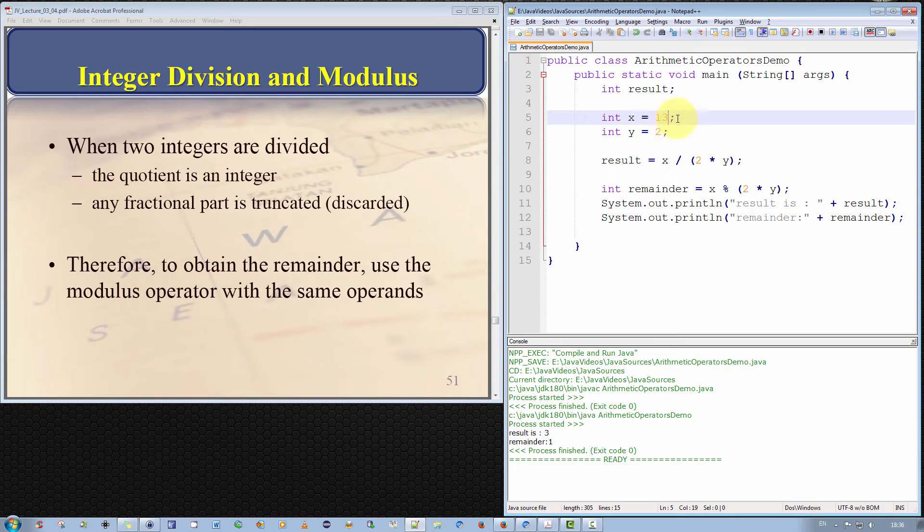And just one more example. We'll try 16 and we'll try 3 this time. Just to show this. So what should happen? Well 3 multiplied by 2 is 6. 3 multiplied by 2 is 6. 6 into 16 goes twice and 4 over. So I'm expecting result to be 2 and remainder to be 4. Let's see what happens. The result is 2 and the remainder 4. So the modulus operator gives us the remainder of an integer division operation.